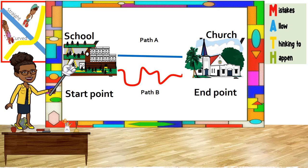On the straight path: 1, 2, 3, 4, 5, 6, 7, 8, 9, 10, 11, 12. So we have 12 points on the straight path.